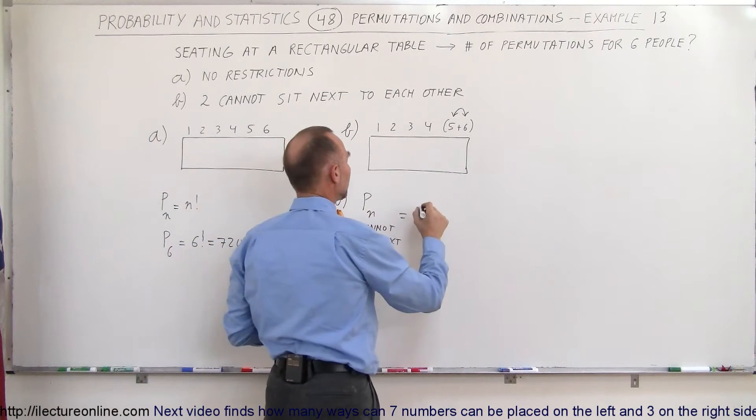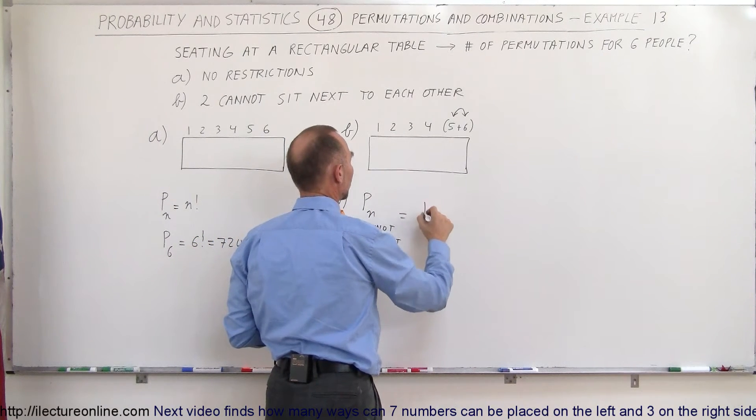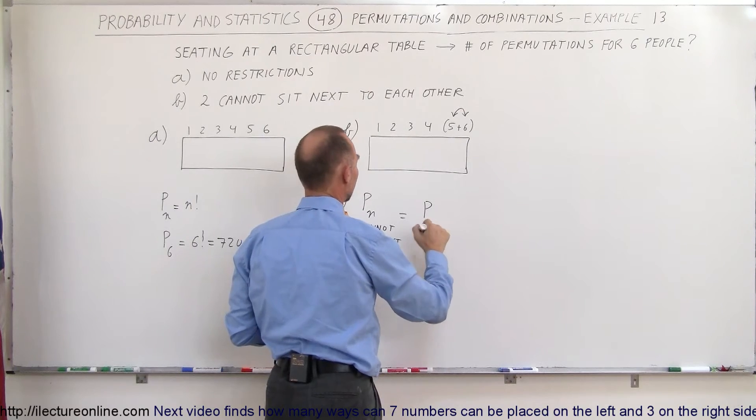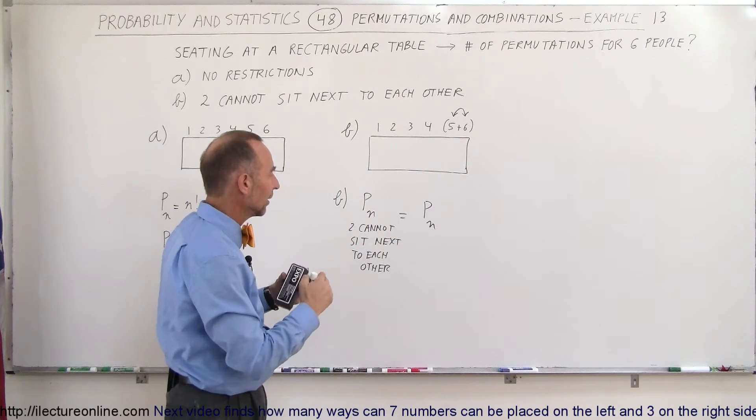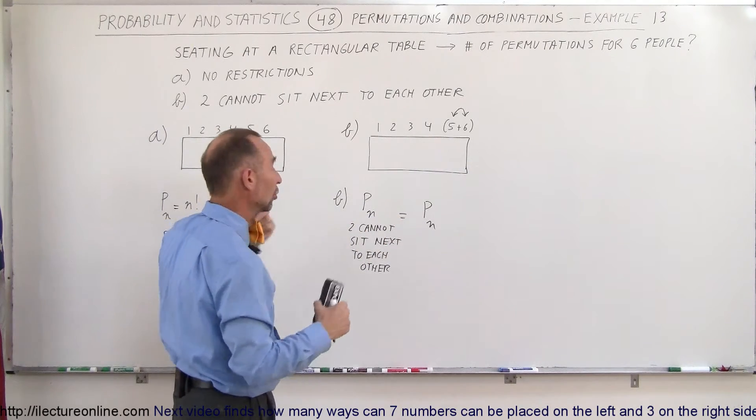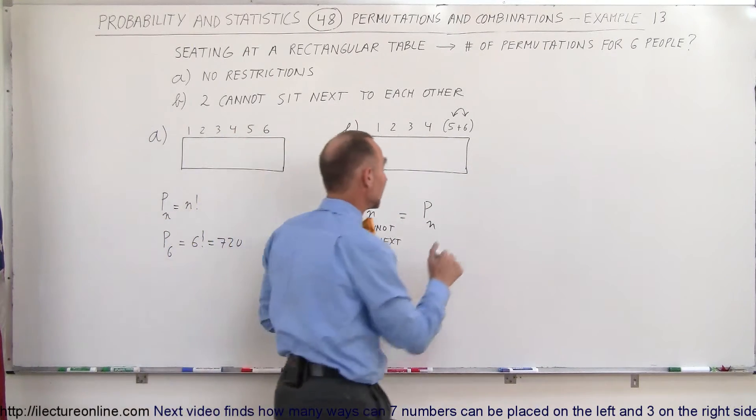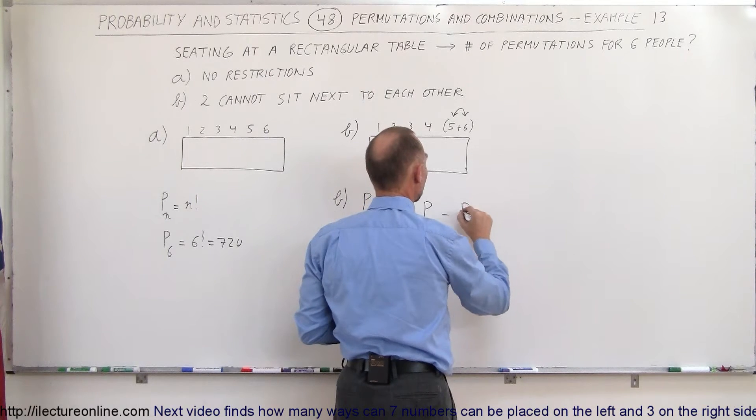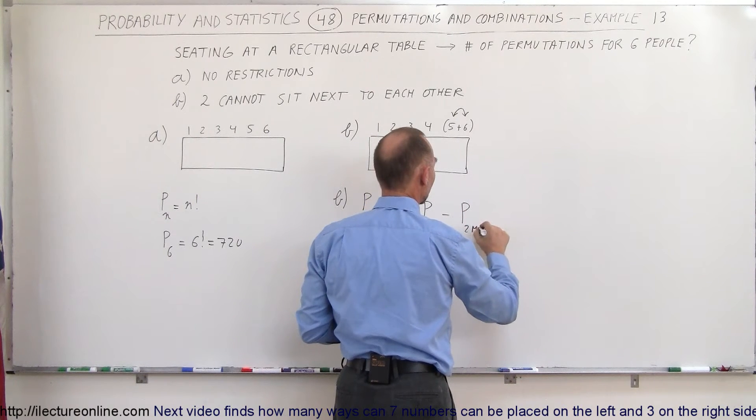Well it would be the number of permutations where we have n, so you take the account that you find the solution in Part A, the number of permutations with n people sitting at the table minus the number of permutations where two must sit next to each other.